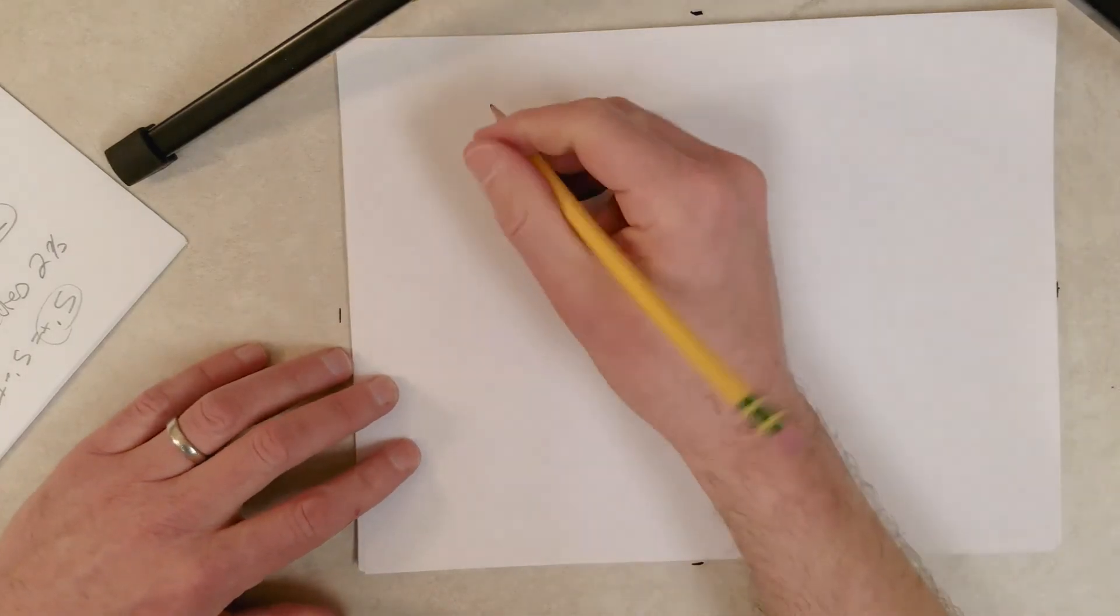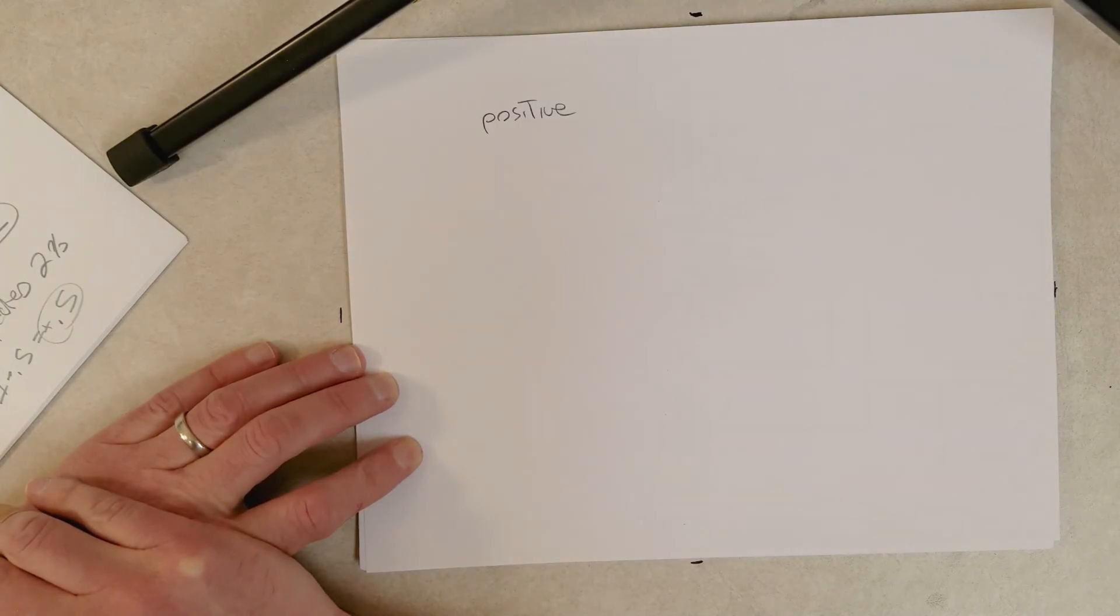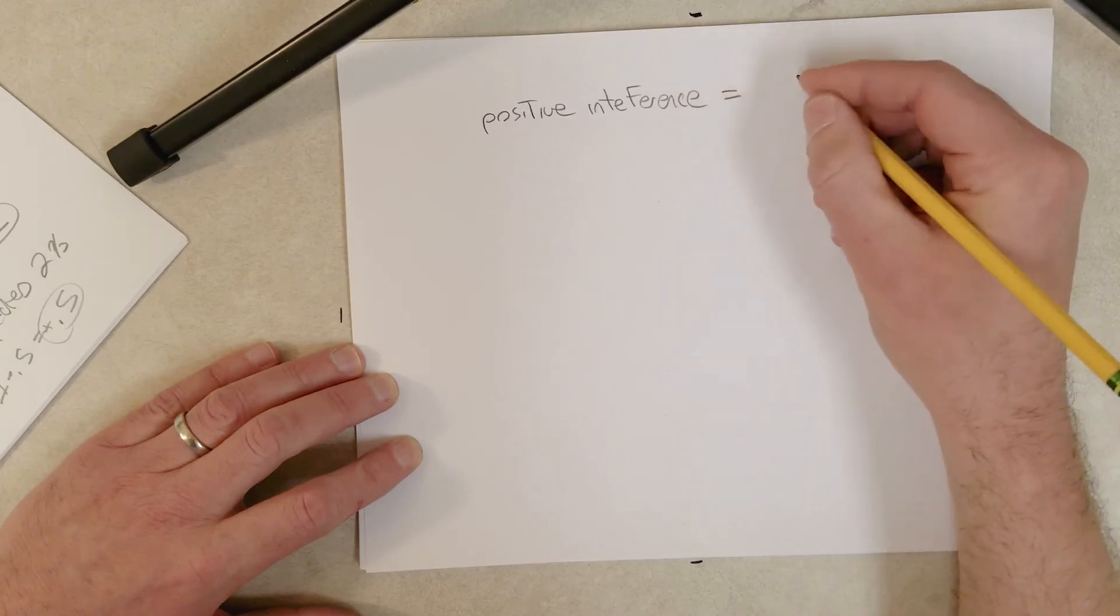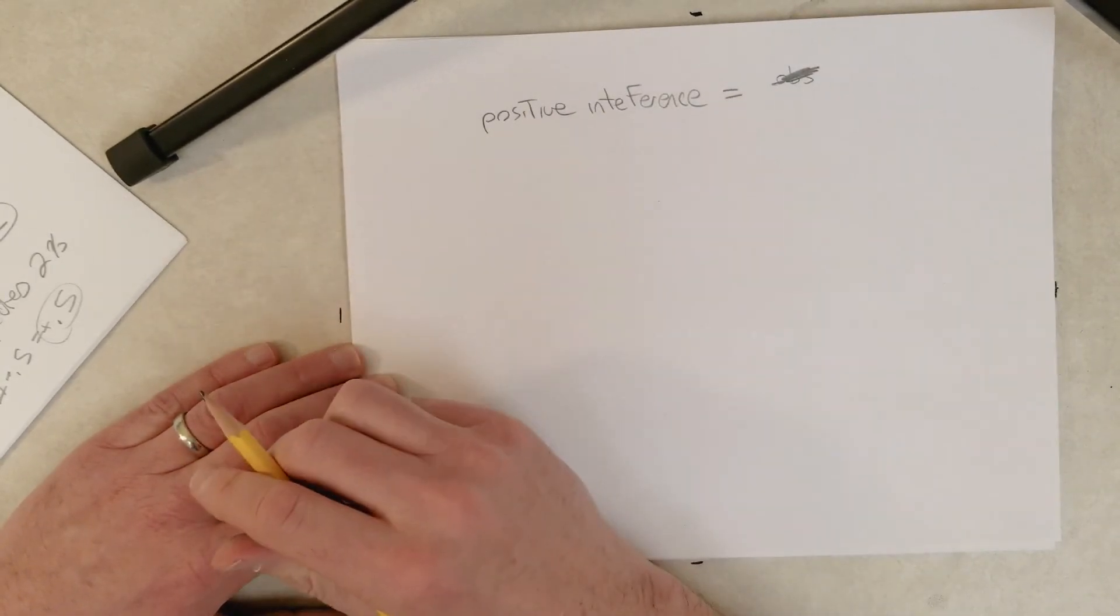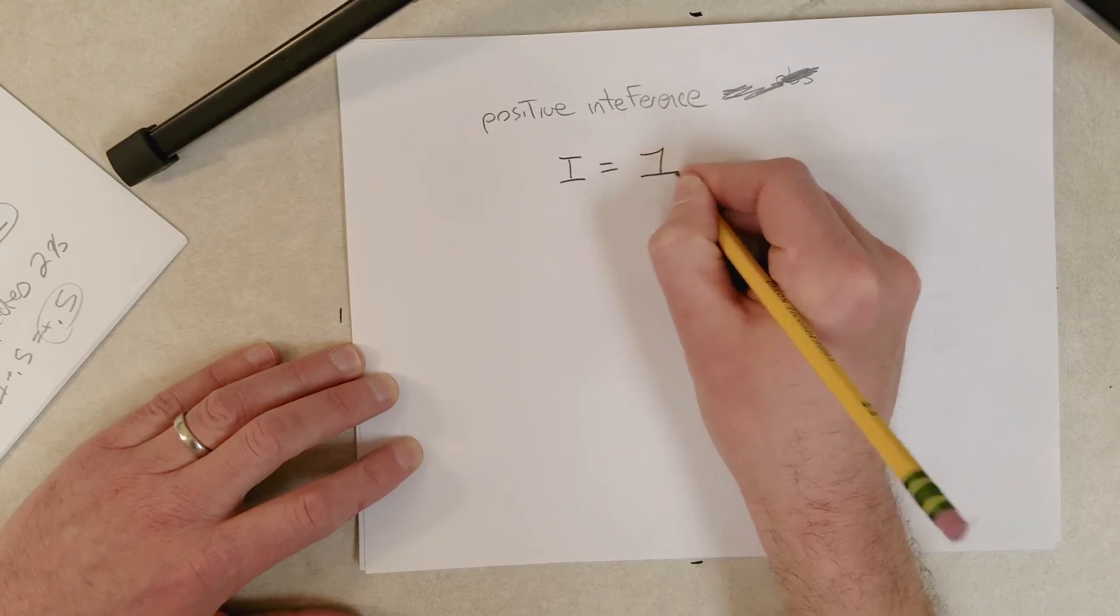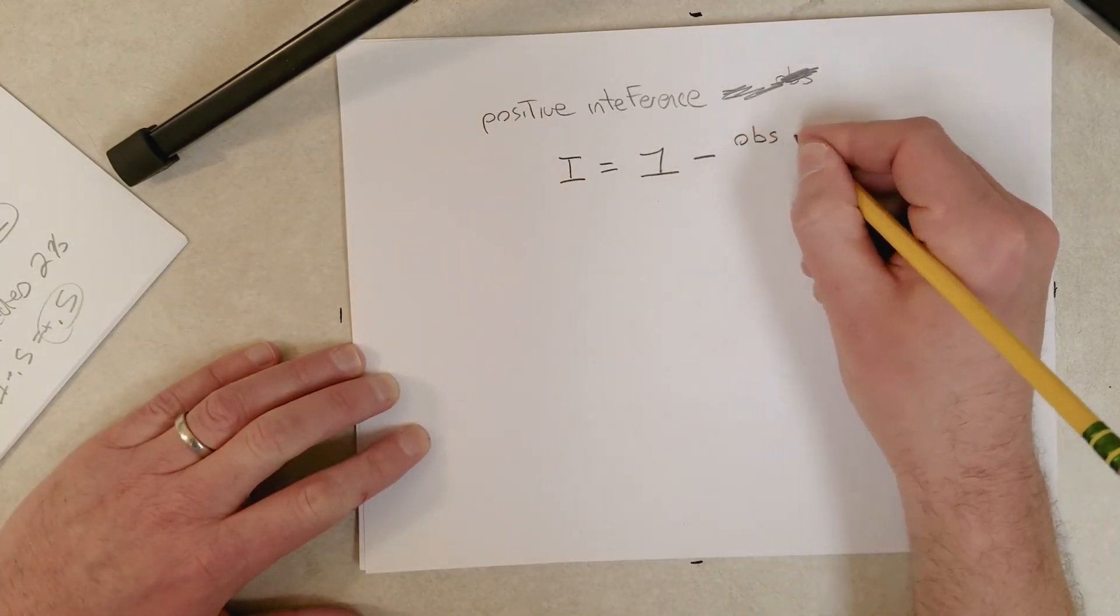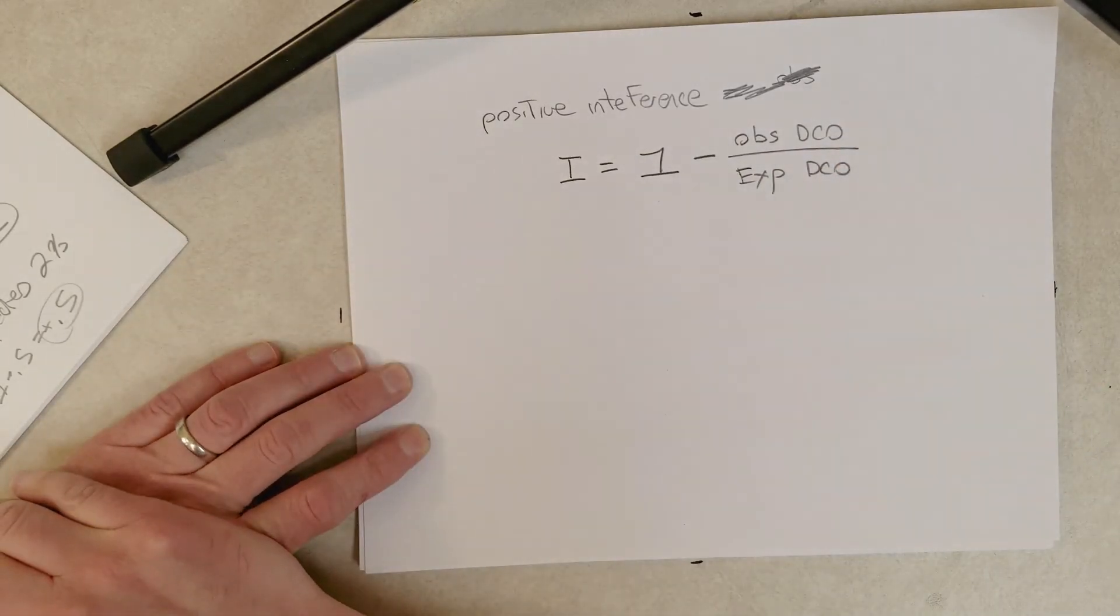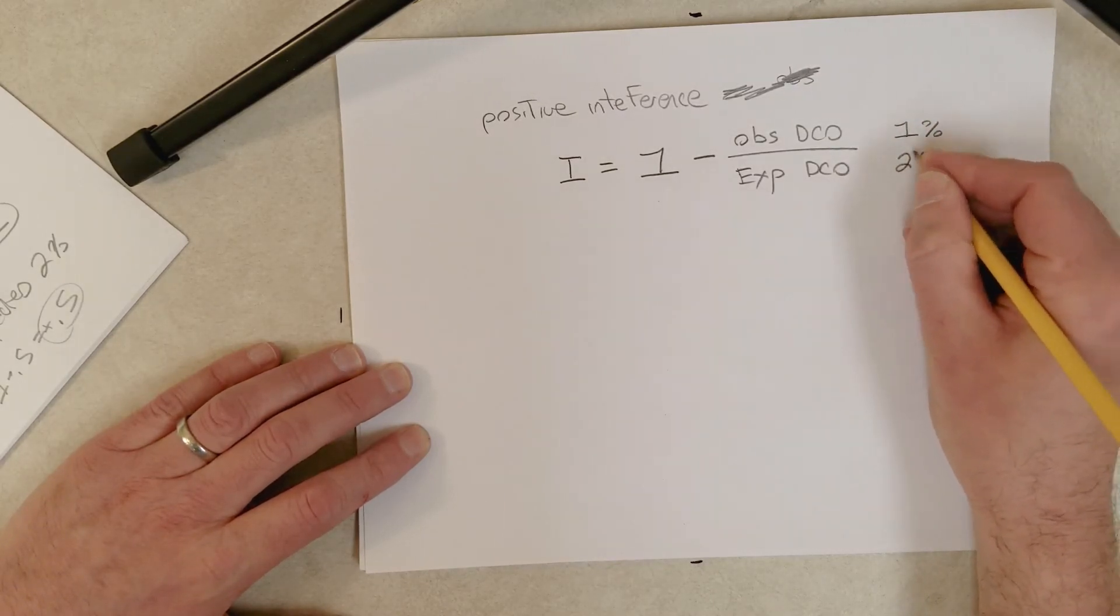Let's look at positive interference. Positive interference is when we observe less double crossovers than we predict, observing less than we expect. How do we calculate that? Interference, same calculation that we use for negative interference, but if it's positive interference, it should result in a positive number. Observed double crossover percent divided by expected double crossover percent. Let's say we observed 1%, but we expected 2%.